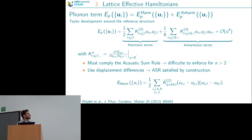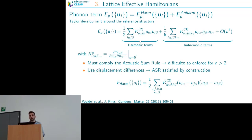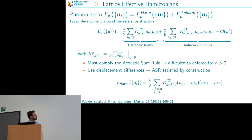Going into more detail: the lattice energy has harmonic and anharmonic parts. The harmonic part is essentially all the interatomic force constants, and higher-order terms are successive derivatives of the energy. The energy must comply with the acoustic sum rule. Since enforcing this is very difficult for orders higher than two, we use differences of displacements, so the acoustic sum rule is satisfied by construction.